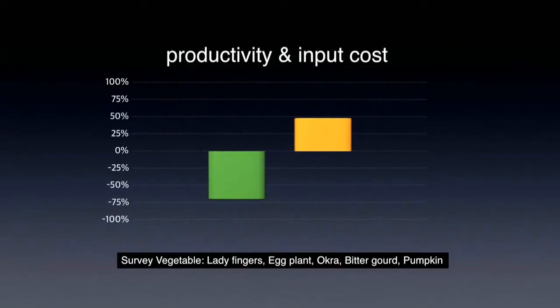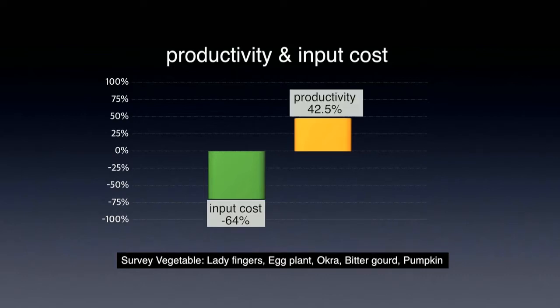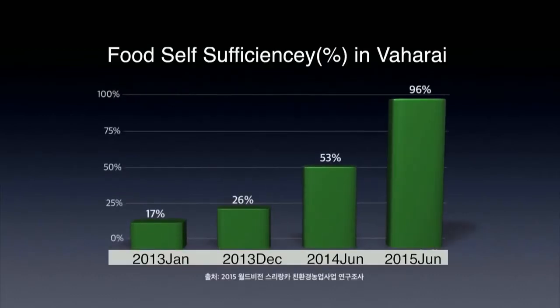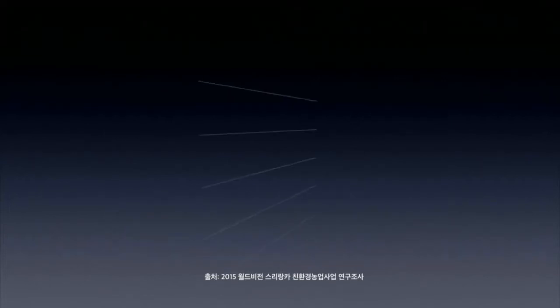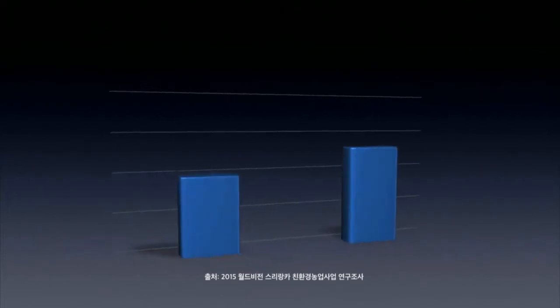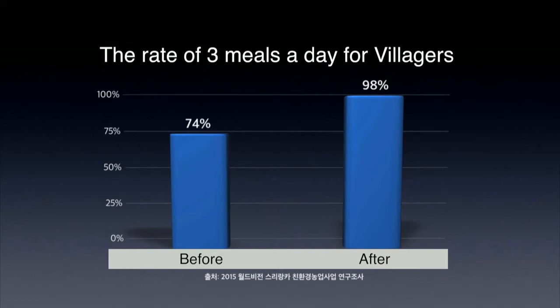Comparing the past three years, farming costs have gone down by 64% and production has increased by 42.5% among farmers conducting this method. Food self-sufficiency has been improved, and the rate of villagers who can afford three meals a day in Varay has increased by about 20%.